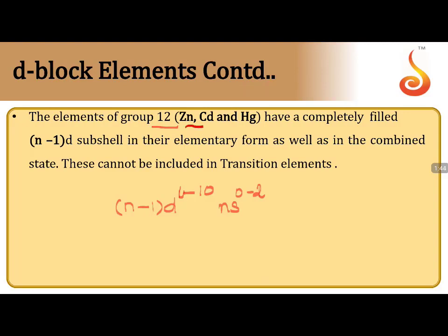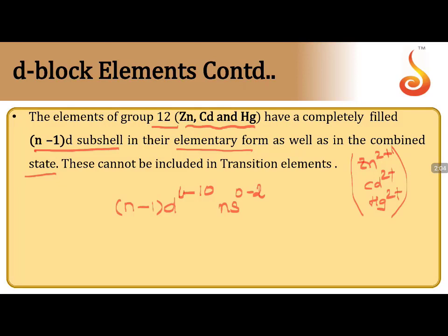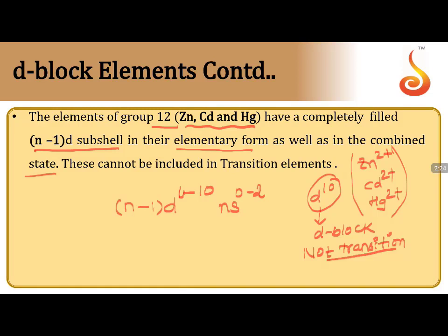The elements of group 12 — zinc, cadmium, mercury — have a completely filled (n-1)d sub-shell in both elementary and combined forms. For example, Zn²⁺, Cd²⁺, Hg²⁺ always have completely filled d configuration, making them only D block elements. They are not considered transition elements — this is a very important point.